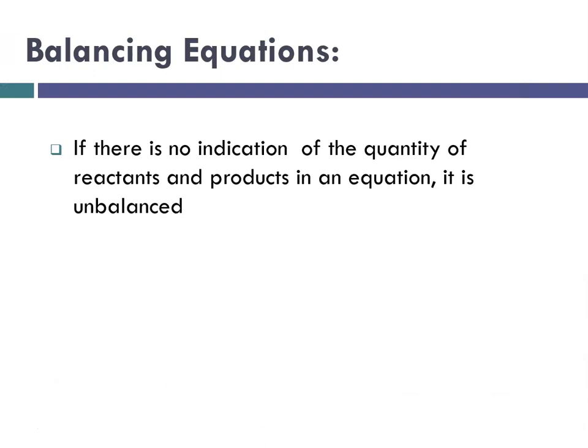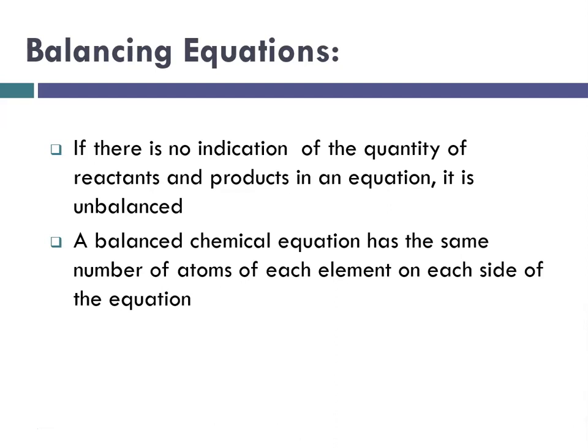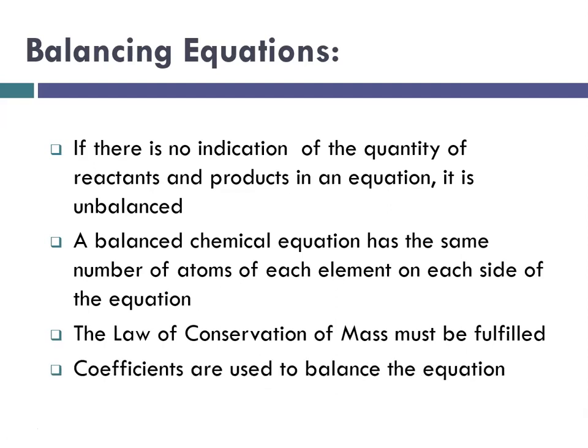So that leads us to balancing equations. If there is no indication of the quantity of reactants and products, it is likely unbalanced. And the balanced chemical equation has to have the same number of atoms of each element on each side of the equation. And so the law of conservation of mass must be fulfilled. Therefore, thus and such, we use coefficients to balance said equation.